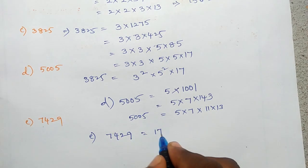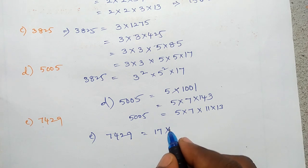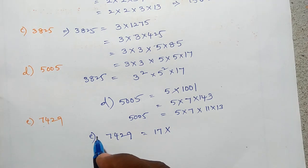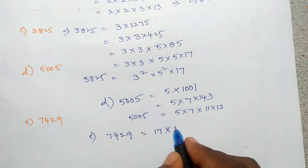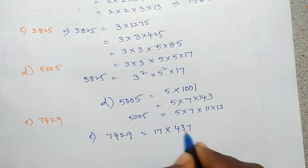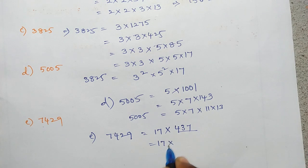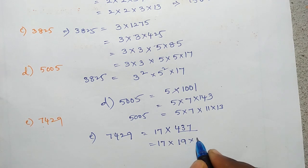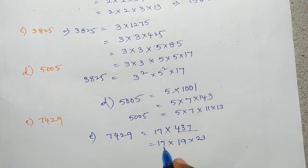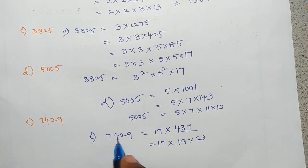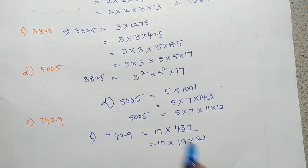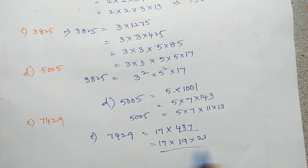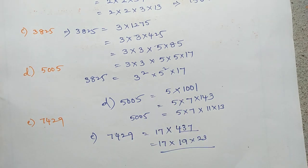Next, problem E: 7429. It is not divisible by 1, 2, 3, up to 16 — it is divisible by 17. So 17 into 437. Then 437 is divisible by 19, giving 19 into 23. So 7429 is a product of 17, 19, and 23 — three prime numbers. This is the prime factorization method.